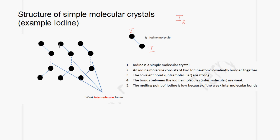The bonding between the iodine atoms is covalent and is very strong. But between the molecules — represented by the dotted lines — these bonds are very weak. It is because these bonds are very weak that iodine has a low melting point, and it is able to convert into a vapor very easily.